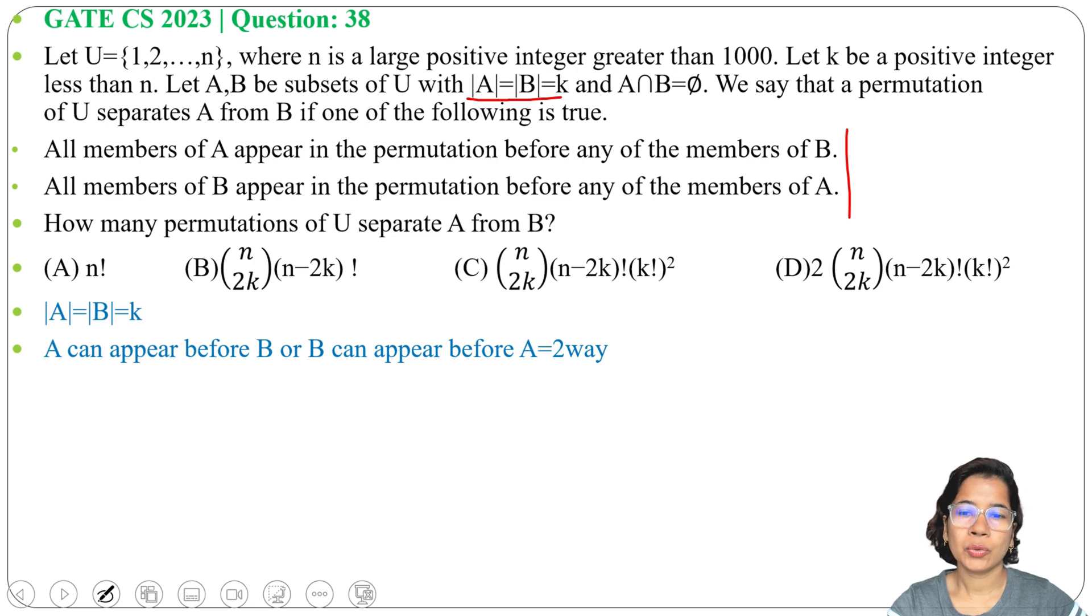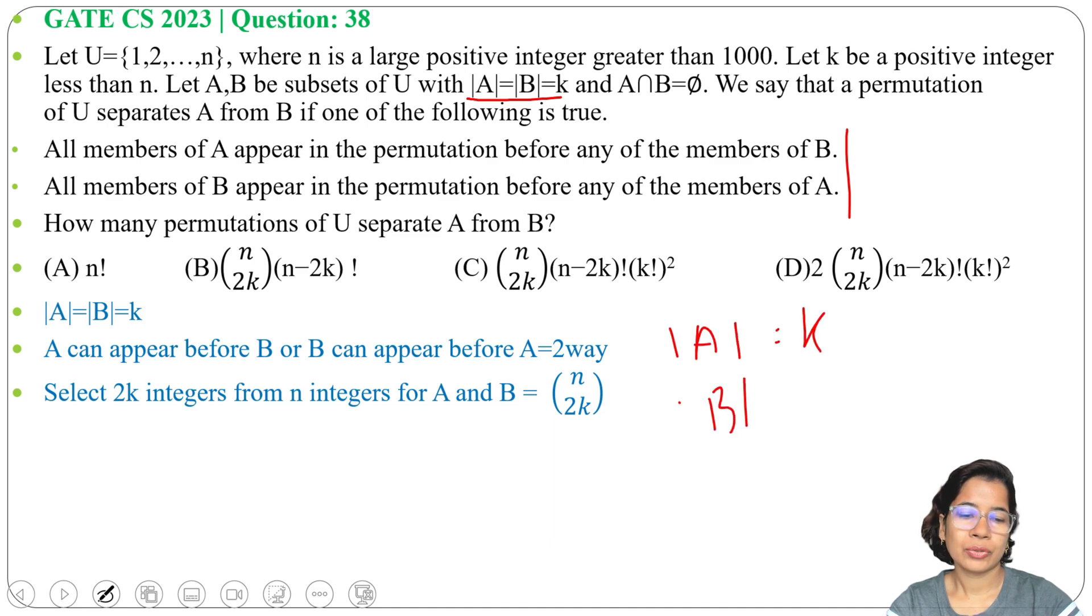A can appear before B one way, B can appear before A another way, total two ways. From n elements we are choosing 2k elements: k for A, k for B. Total there are n elements. We will choose 2k elements, that we can do in C(n,2k). So from n elements we are choosing 2k elements together for A and B.